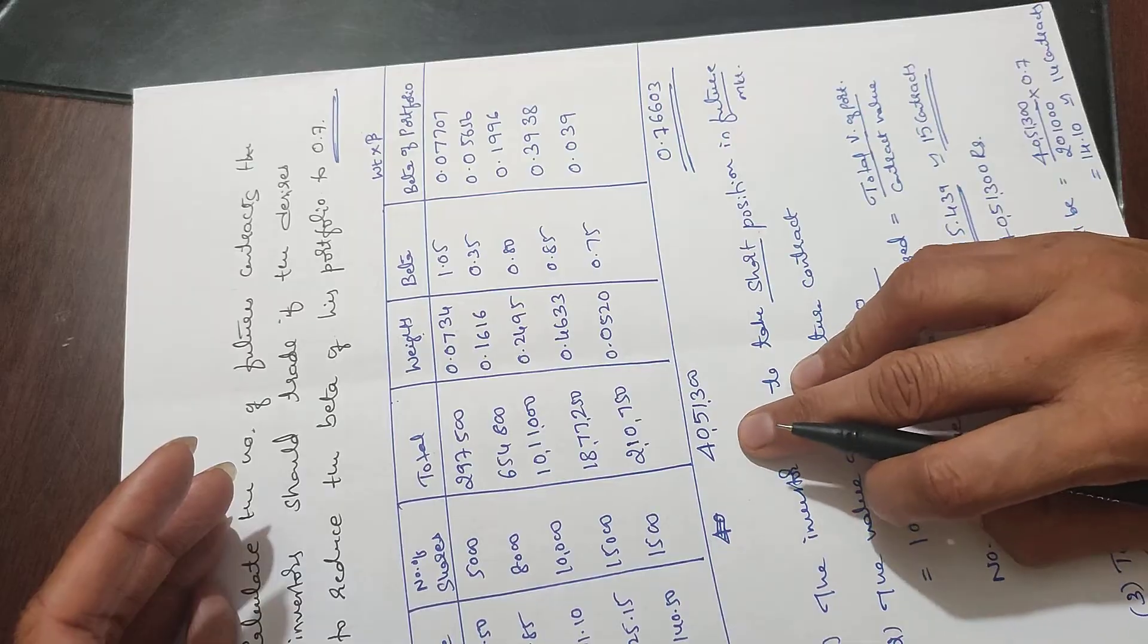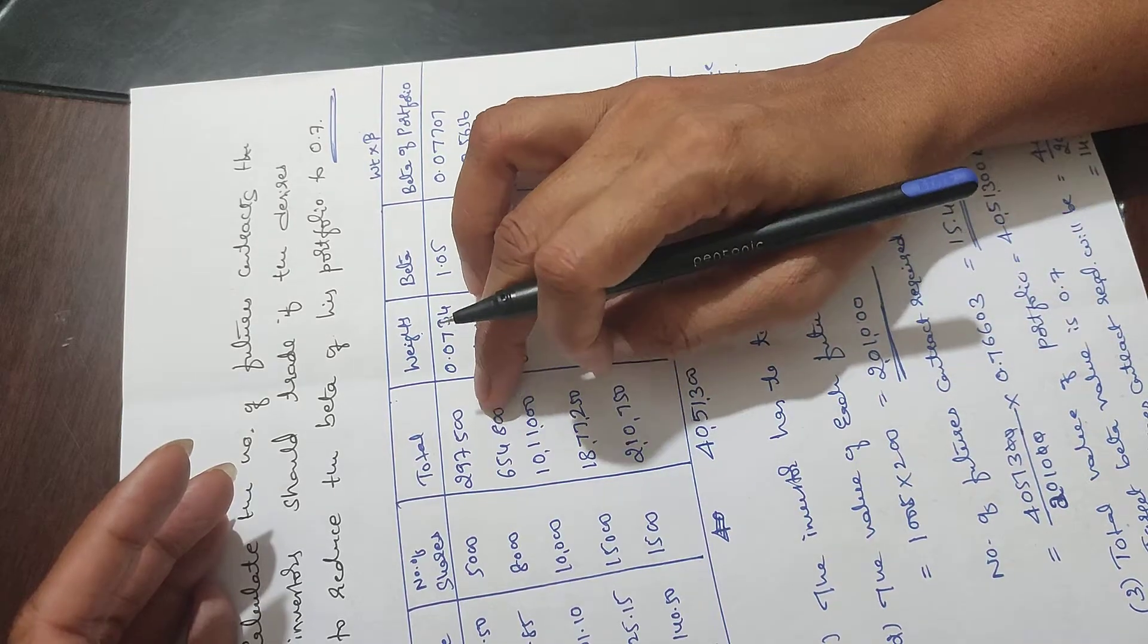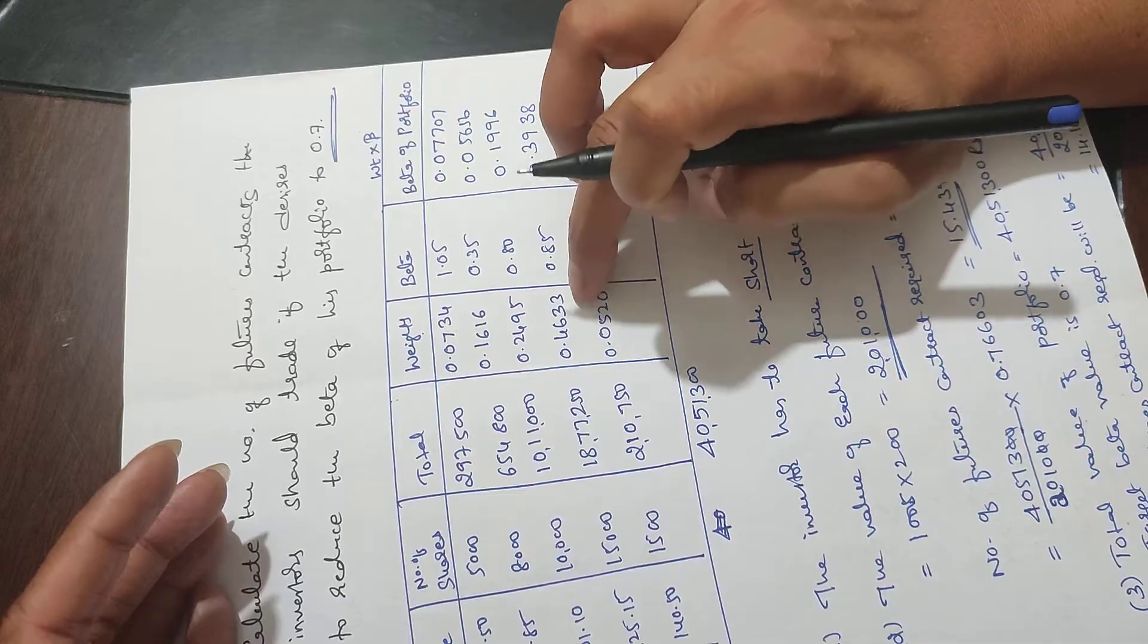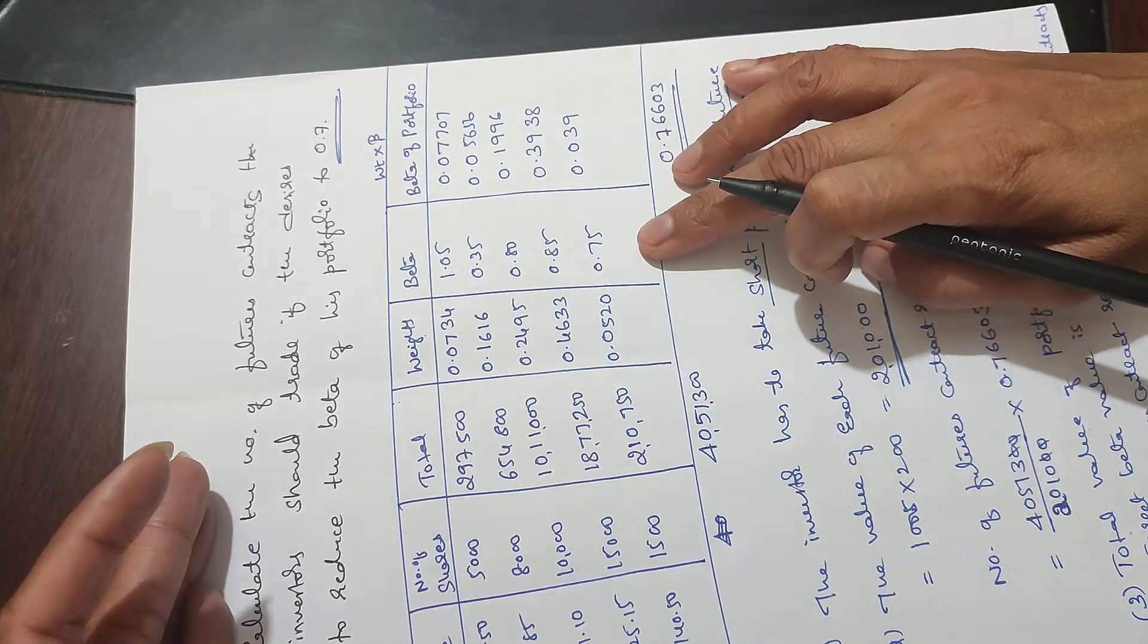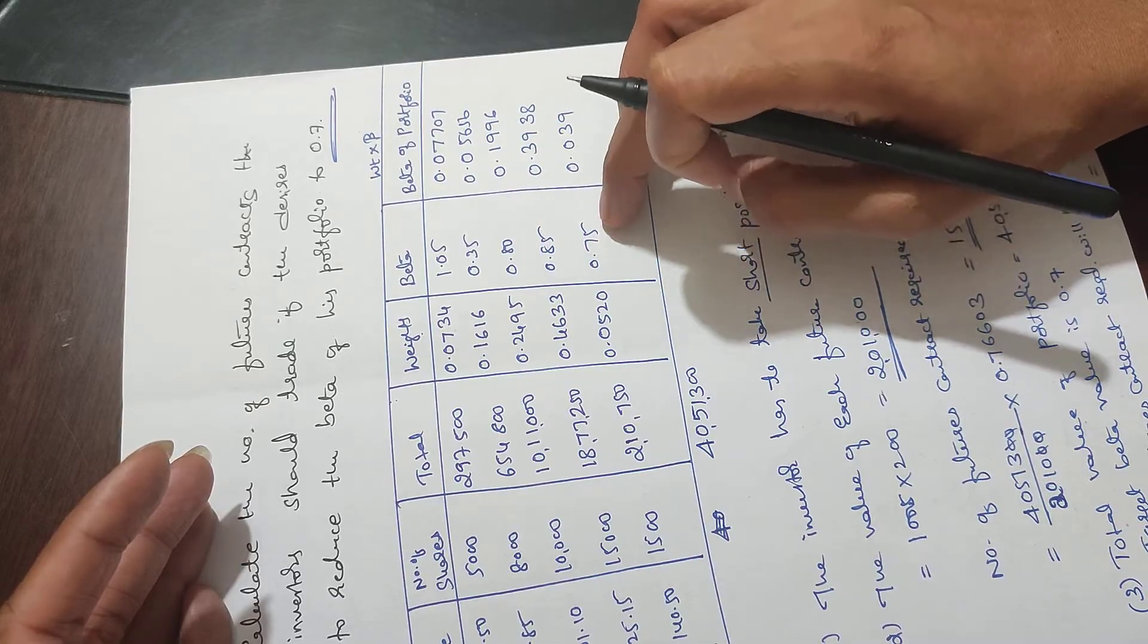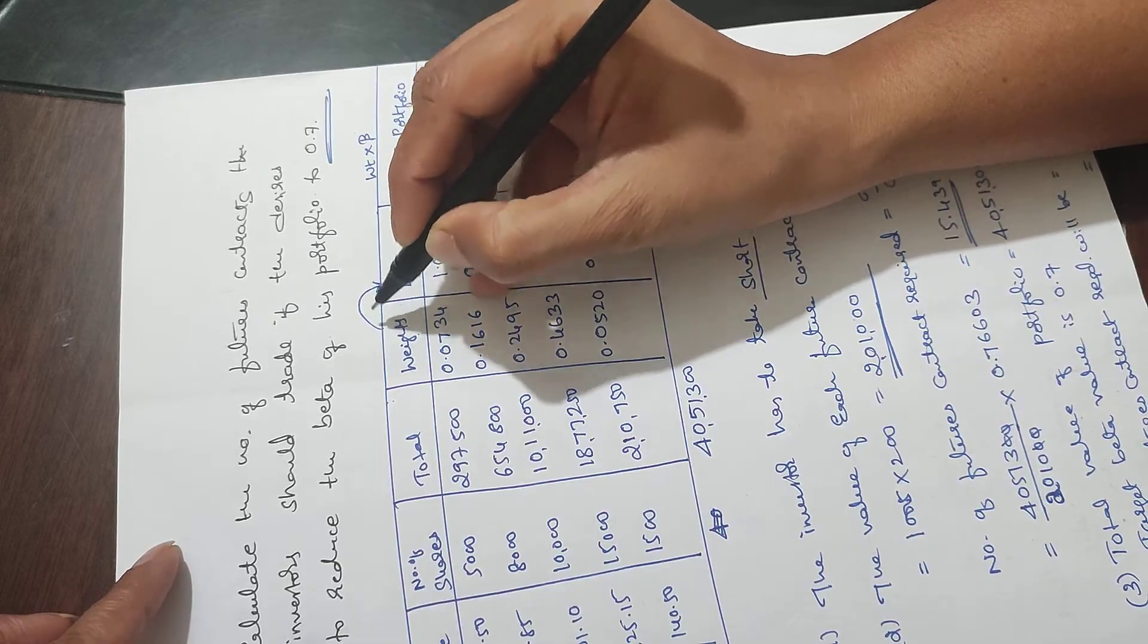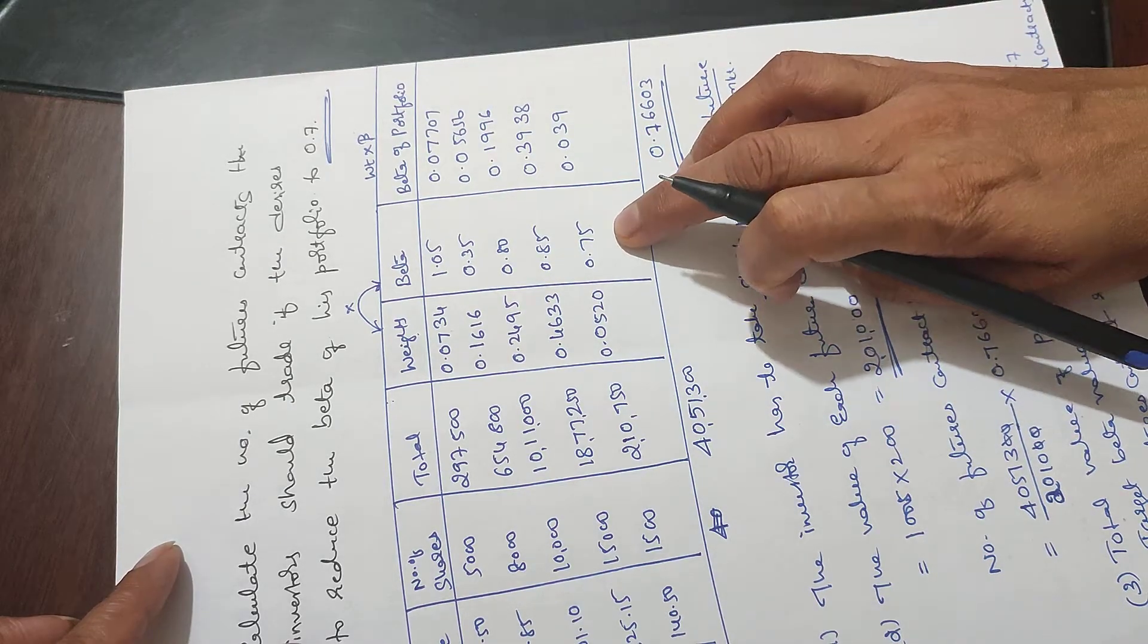2 lakh 97,500 divided by 40 lakh 51,300 gives weight of 0.0734. Similarly we get 0.1616, 0.2495, 0.4633, and 0.0520. These are the weights. The stock betas are 1.05, 0.35, 0.8, 0.85, and 0.75.